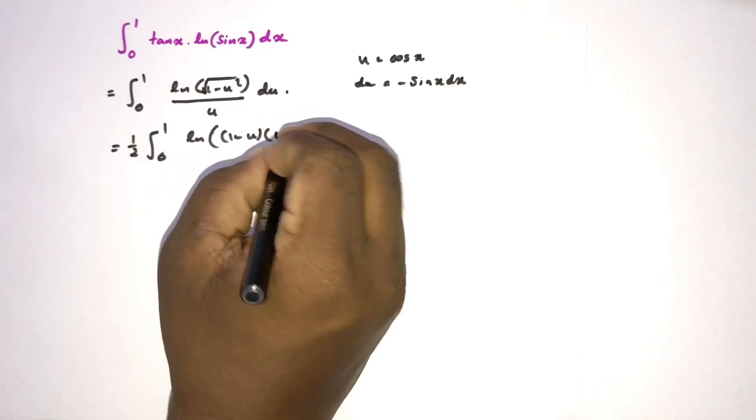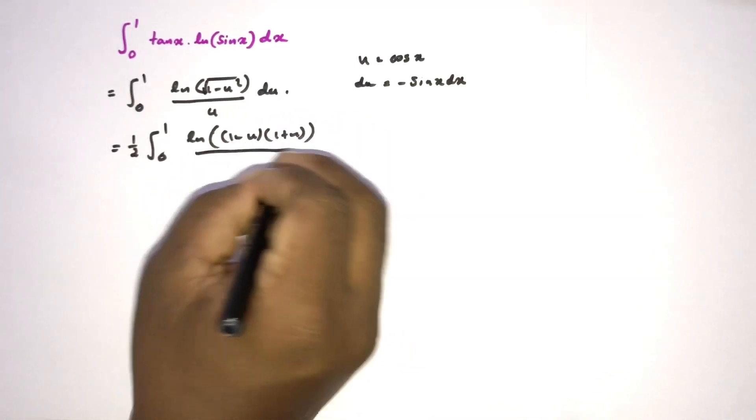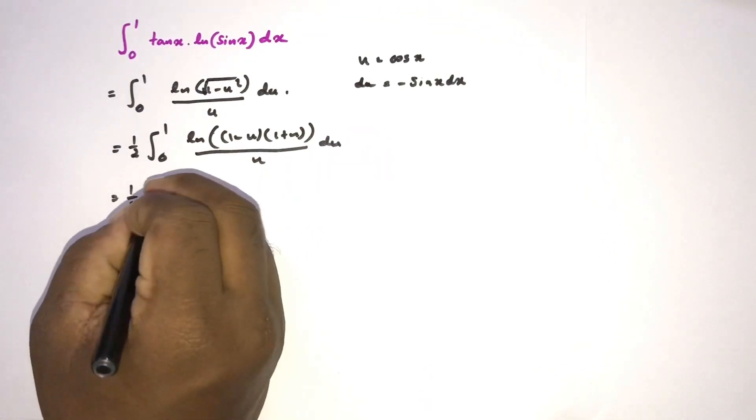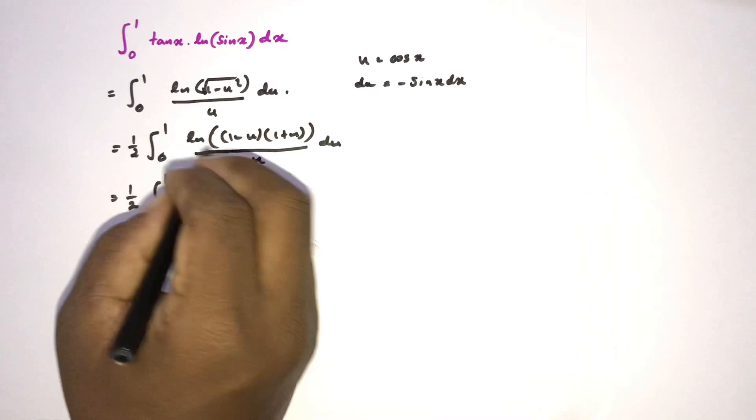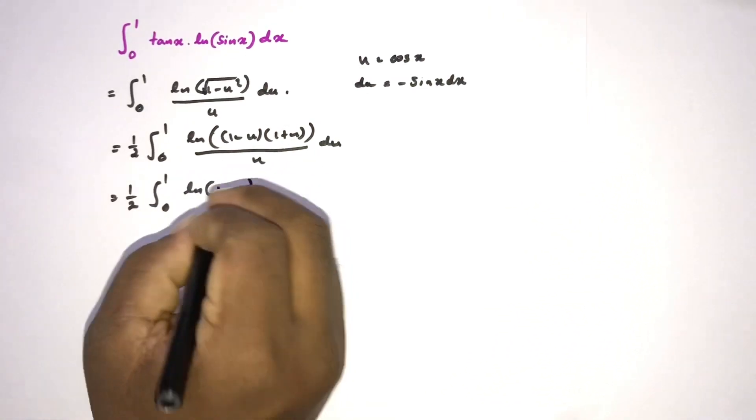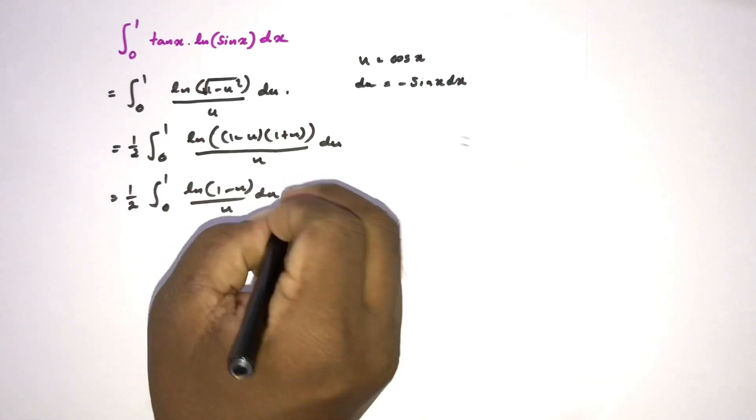Now we can expand this integral into two different integrals according to the property of natural log. So natural log of one minus u over u du plus natural log of one plus u over u du.